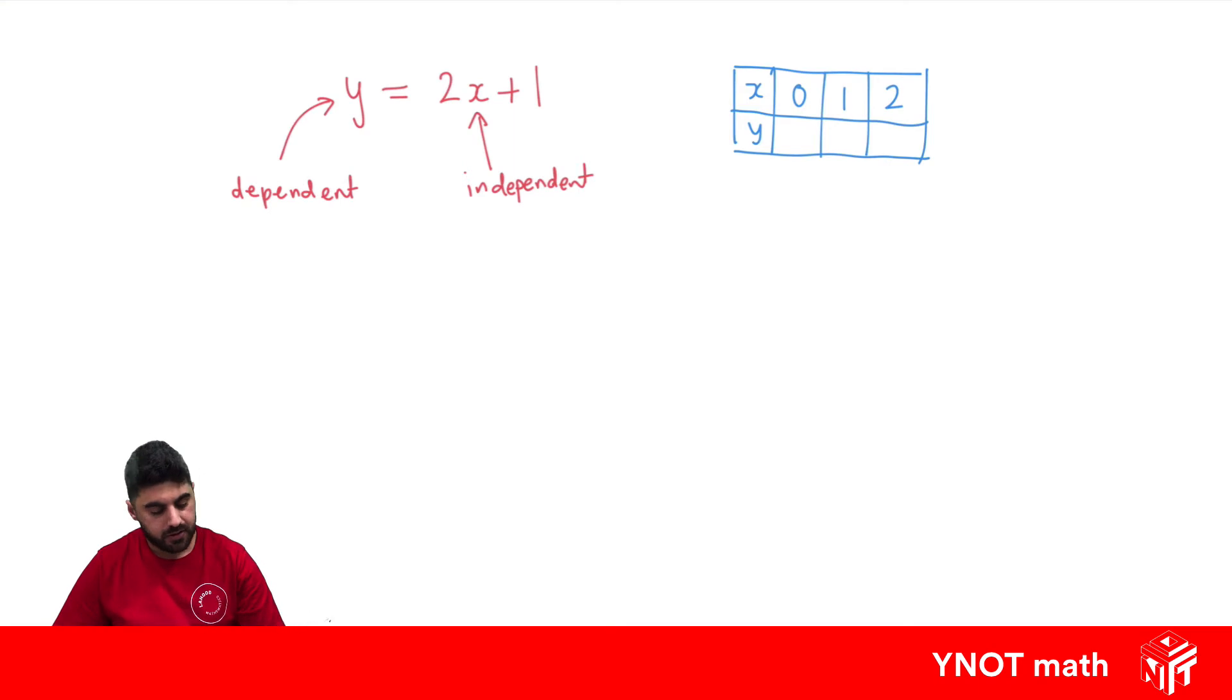And you can see already that once we fill this in, we're depending on the values of y from our x values. So these are independent, and these ones are depending on what these values are.